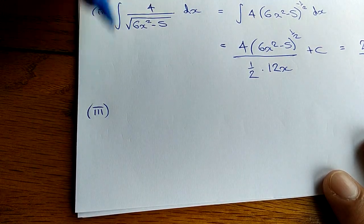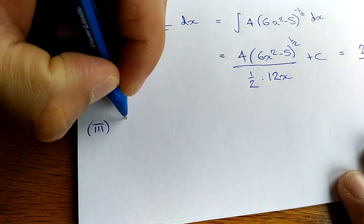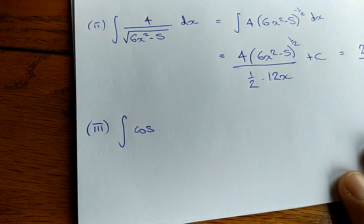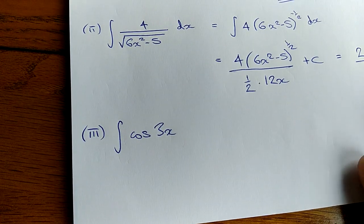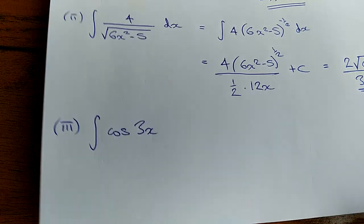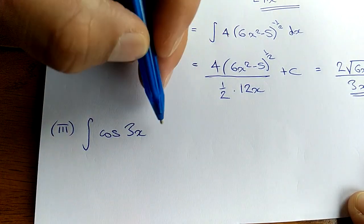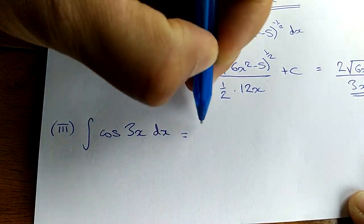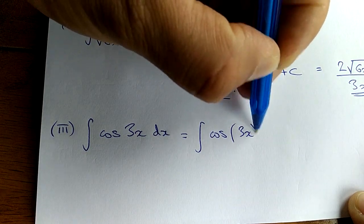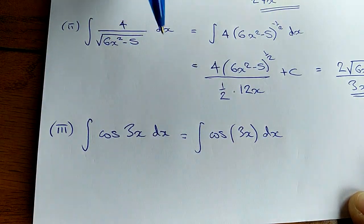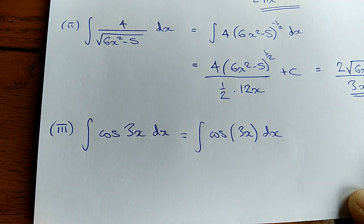Let's pick one more using a trig function. Let's do the integral of cos 3x. Simple as that. Now in order to integrate this, there are no brackets, so we need to introduce an inside function and an outside function. We need to introduce brackets. So we're going to rewrite it as the integral of cos bracket 3x dx. In other words, 3x has become our inside function and the cos is our outside function.